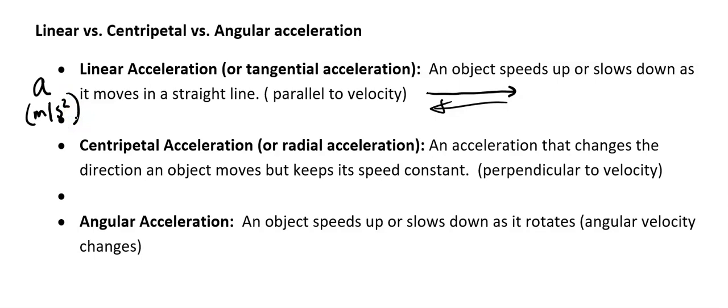Centripetal acceleration - we talked about this during our circular motion unit. A synonym for centripetal, again, centripetal means center-seeking, along the radial line. So radial acceleration is another name for centripetal acceleration. This is an acceleration that changes the direction an object moves. So it keeps its speed constant.